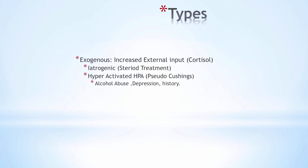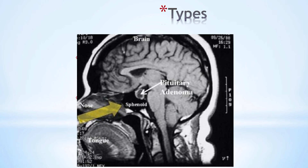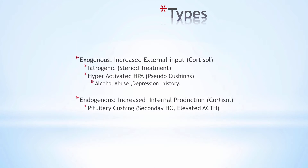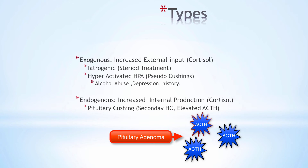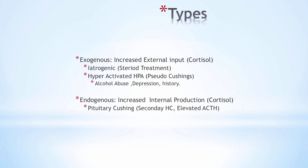The endogenous types are due to increased internal production of cortisol, usually because of an adenoma situated along the HPA axis — most commonly in the anterior pituitary gland, which is referred to as Cushing's disease. These adenomas produce ACTH at high concentrations and are less responsive to the negative feedback of cortisol, resulting in secondary hypercortisolism.